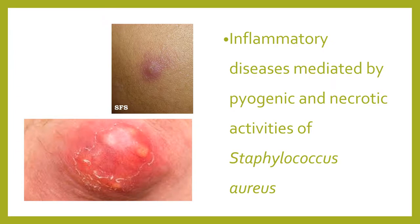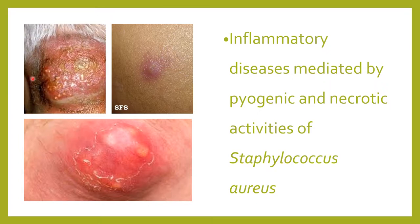When several folliculitis lesions are involved, you don't call that a single furuncle — a conglomeration of two or more furuncles will be your carbuncle. Carbuncles are often seen on the back of the neck. It may have started as folliculitis, then developed into furunculosis, then later into a carbuncle. See how devastating Staphylococcus aureus is.